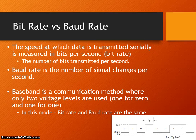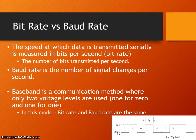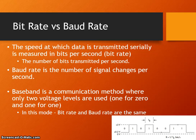We have something known as bit rate and something known as baud rate. Bit rate is the speed at which data is transmitted serially, measured in bits — specifically the number of bits transmitted per second. Baud rate is the number of signal changes per second. Bit rate and baud rate are related: bit rate is usually the same as the baud rate when we encode one bit per signal change.